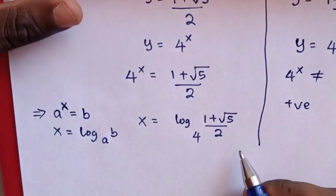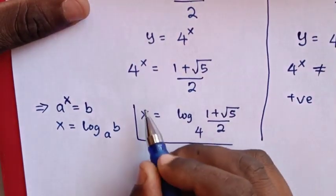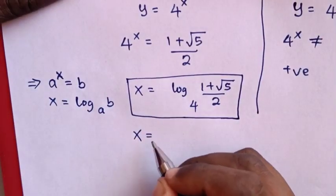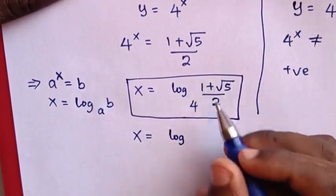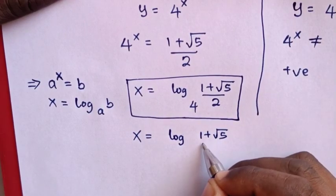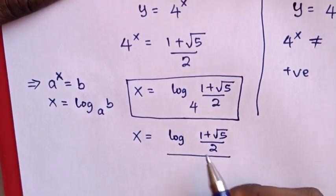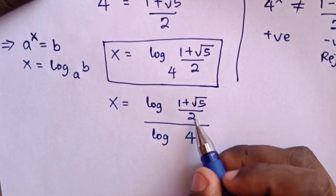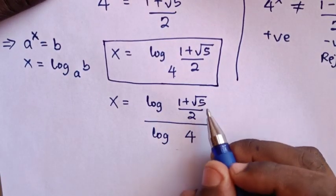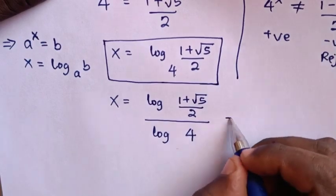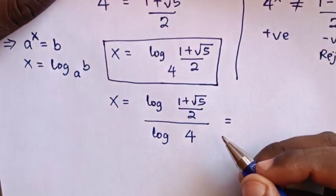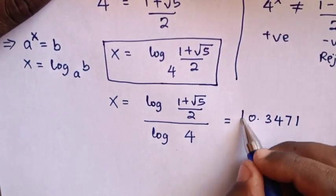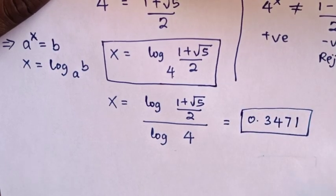Therefore, the value of x in terms of logarithm is x = log base 4 of ((1 + √5)/2). Using a calculator, this equals log((1 + √5)/2) / log(4), which is approximately 0.3471. So this is the value of x in our equation.